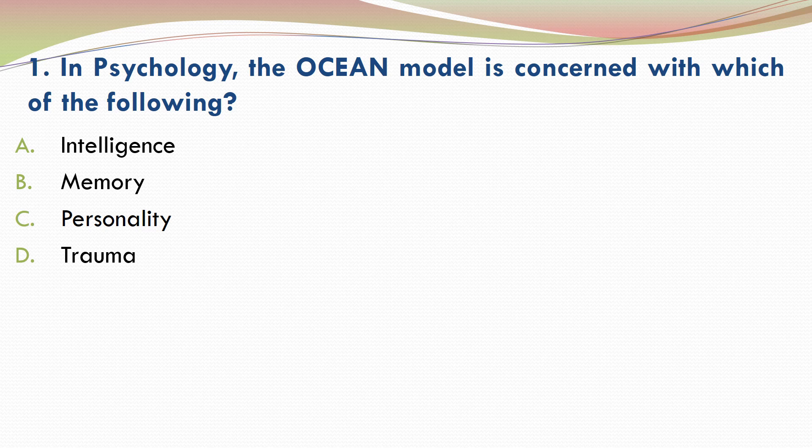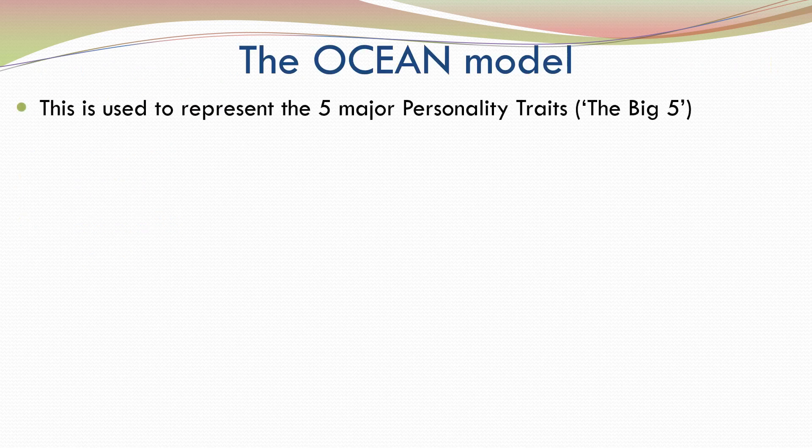If you want, you can pause while you decide your answer. The correct answer is C. Personality. So, in psychology, the OCEAN model is concerned with personality. The OCEAN model is used to represent the five major personality traits, the so-called Big Five.